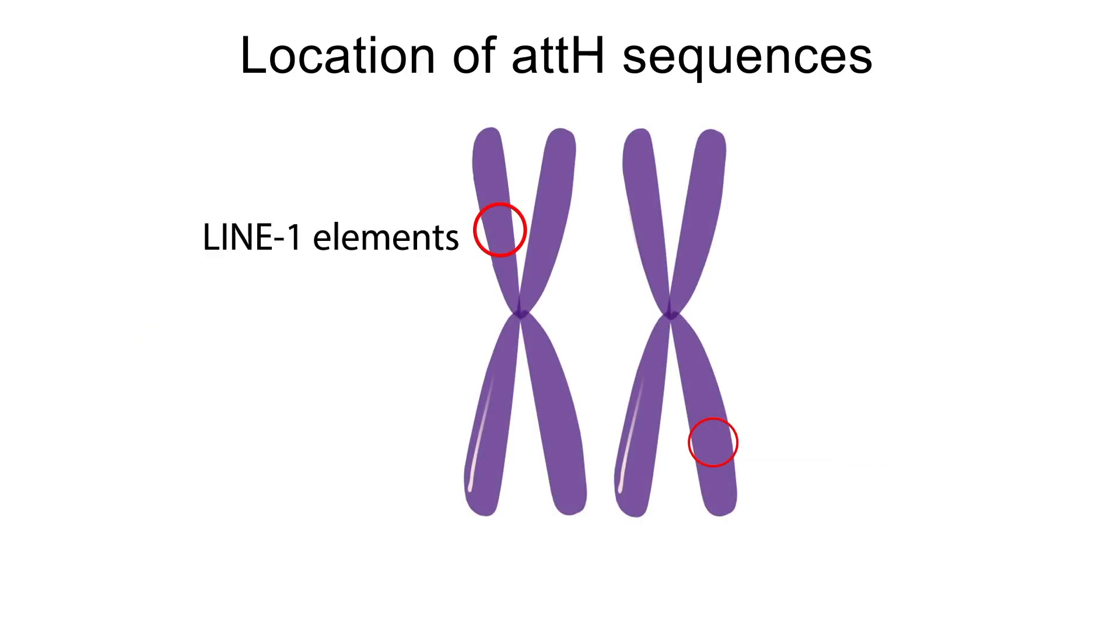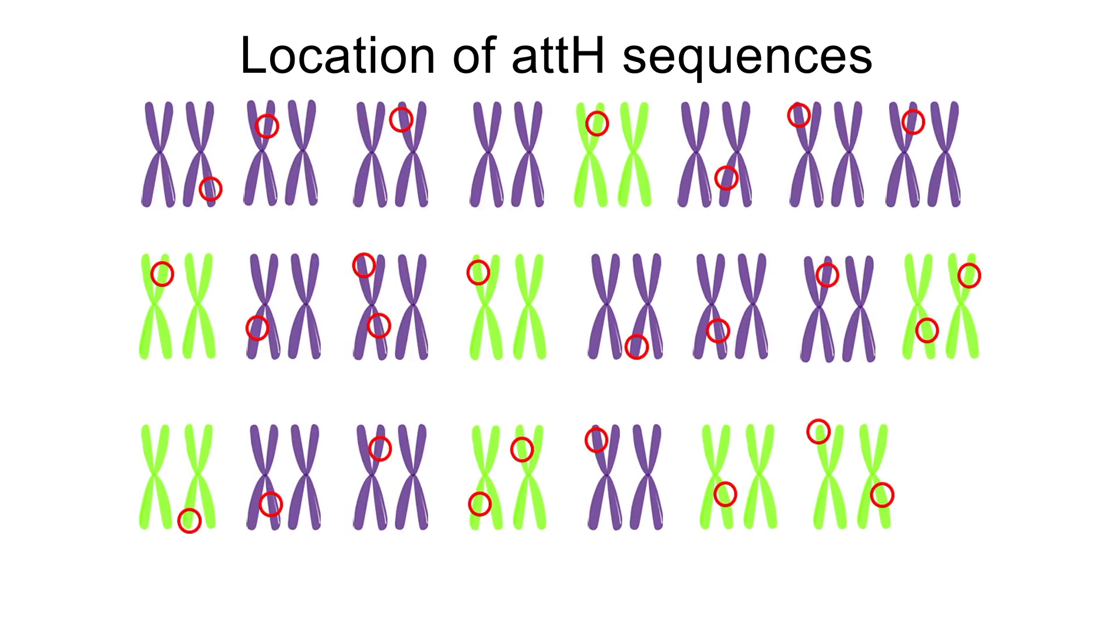AttH sequence is a part of LINE-1 element, and this sequence occurs about 1,000 times in human genome. These LINE-1 elements are scattered throughout the genome.